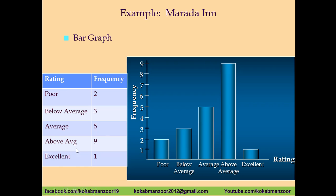Here is a frequency distribution as discussed in the previous lecture. Various guests rated the accommodation of a specific restaurant: 2 said poor, 3 said below average, 5 said average, 9 said above average, and 1 said excellent. To plot it, on the horizontal axis we place all the ratings, and on the vertical axis we place the frequency up to 9. Poor has 2 frequencies, below average has 3, average has 5, above average has 9, and excellent has 1 — draw each bar to the corresponding height.